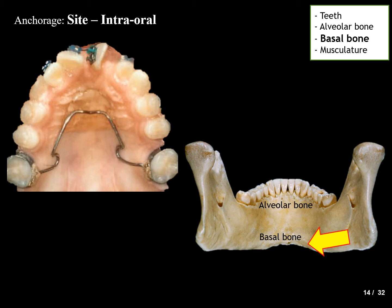The basal bone, which is posterior to the alveolar bone, is more dense and provides better resistance to movement. In the mandible, the lingual surface of the anterior mandible can be used as an anchorage unit. In the maxillary arch, the anterior palate can aid in anchorage.